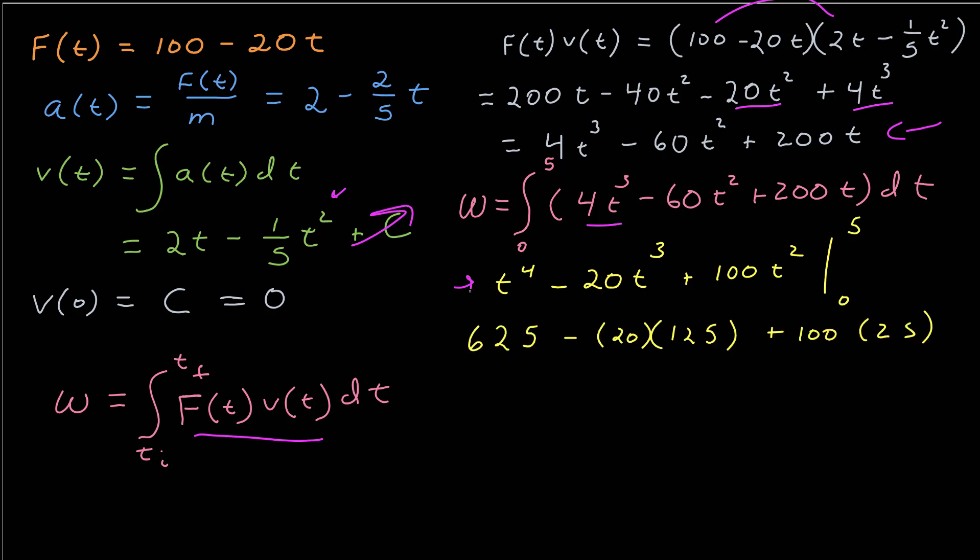So that's just substituting 5 into all of those values. And then I can calculate finally. And interestingly, I get negative 2500 in those, which cancel, with a final work equal to 625 joules.